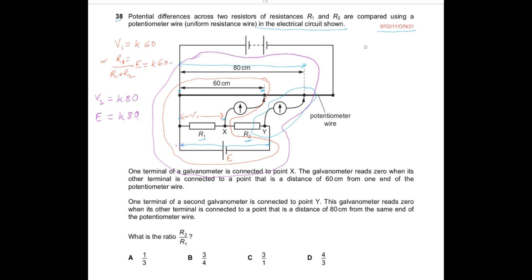If we divide the first equation by the second, we get: R1/(R1 + R2) × E divided by E equals k × 60 divided by k × 80. The k's and E's cancel, giving 60/80 = 3/4. So R1/(R1 + R2) = 3/4.